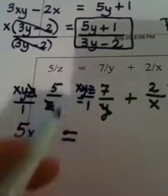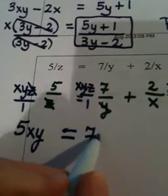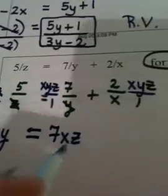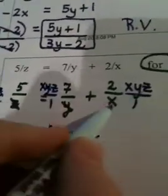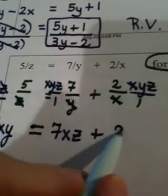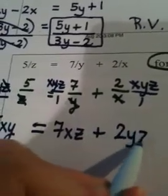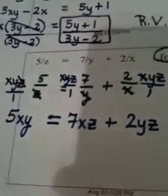And here the x's cancel, leaving me with 2yz. Now I'm trying to solve for x, so I should get all of the x's on the same side.